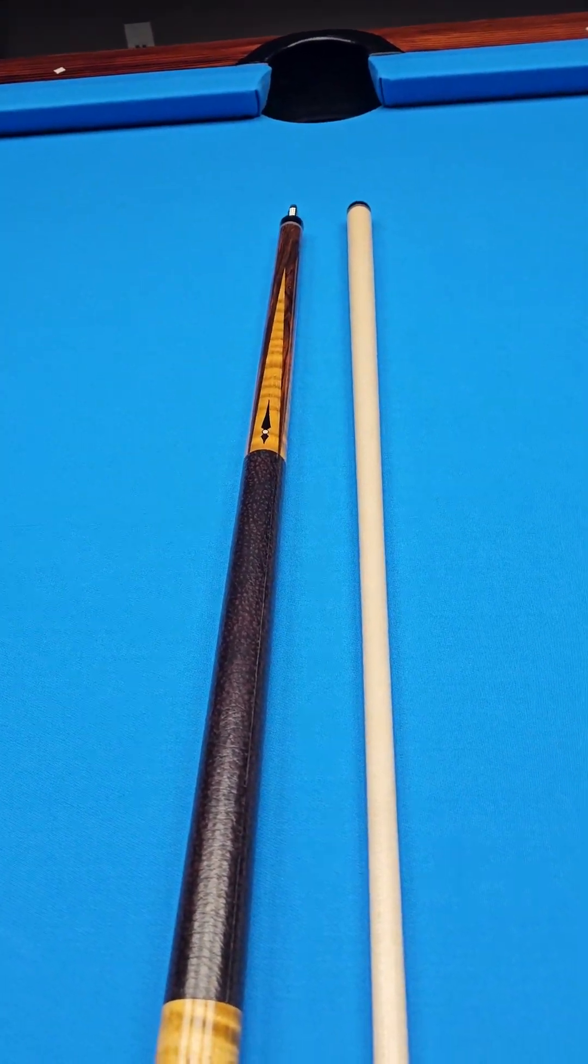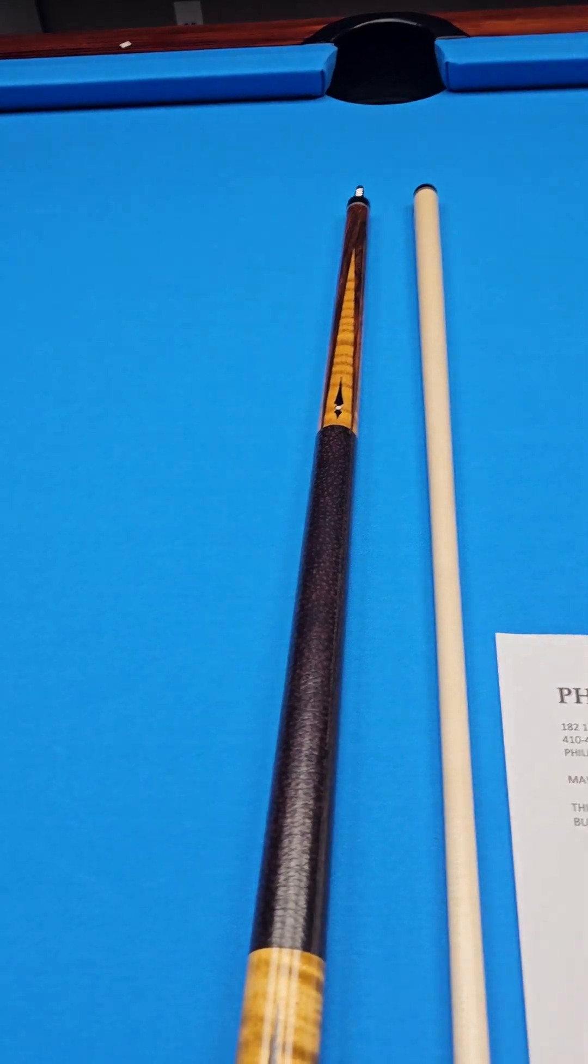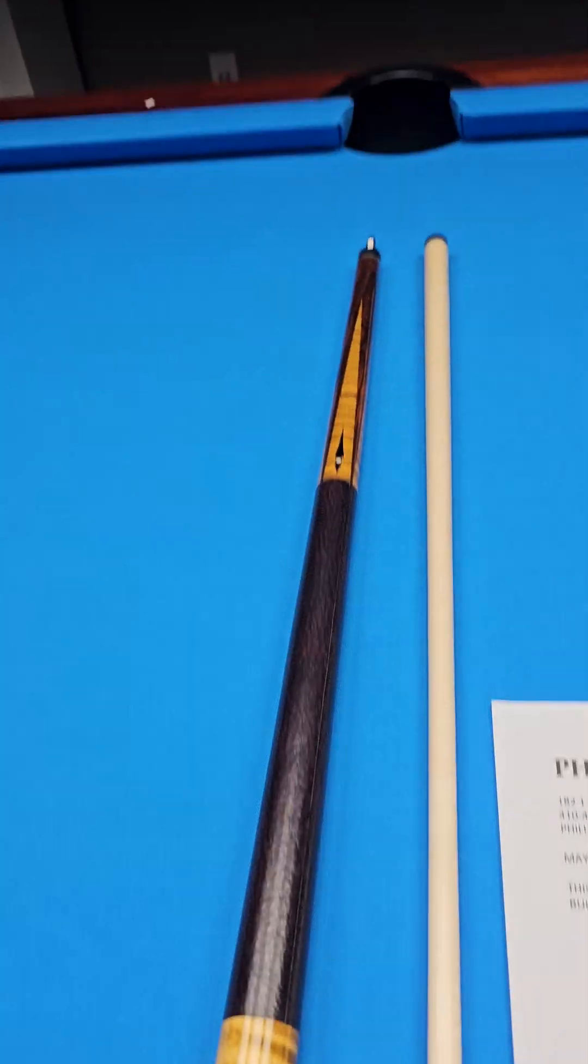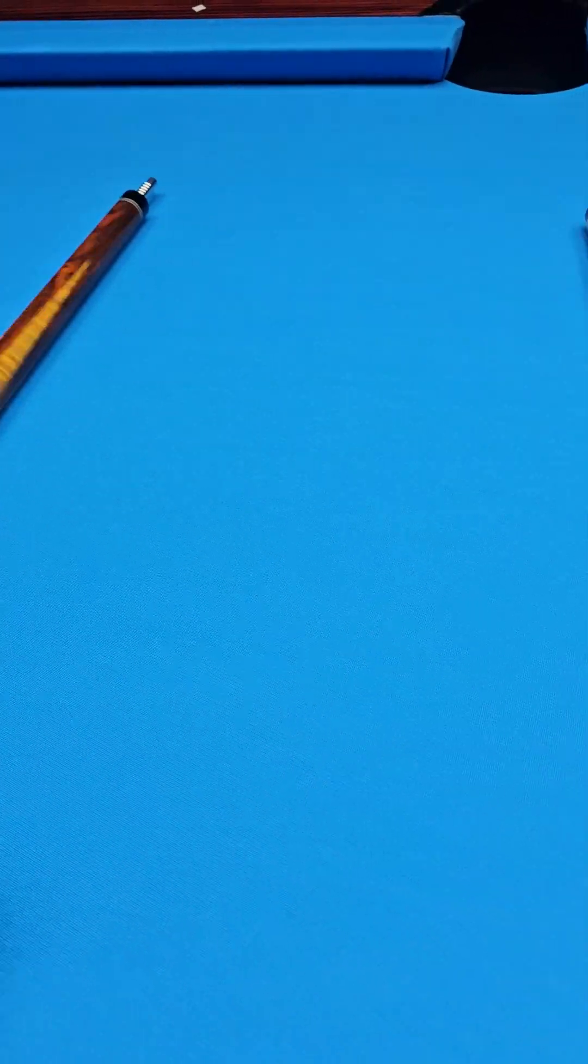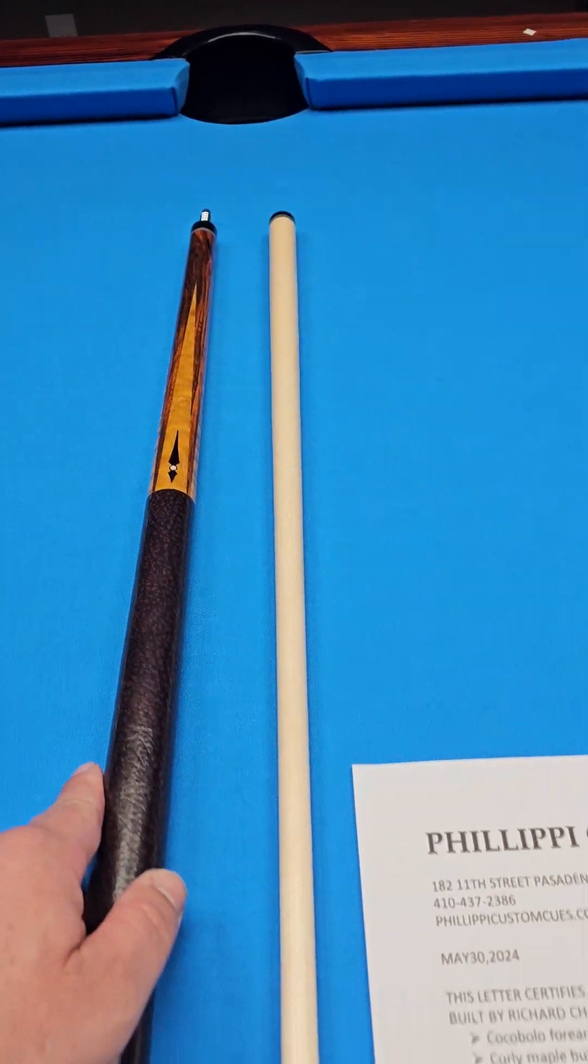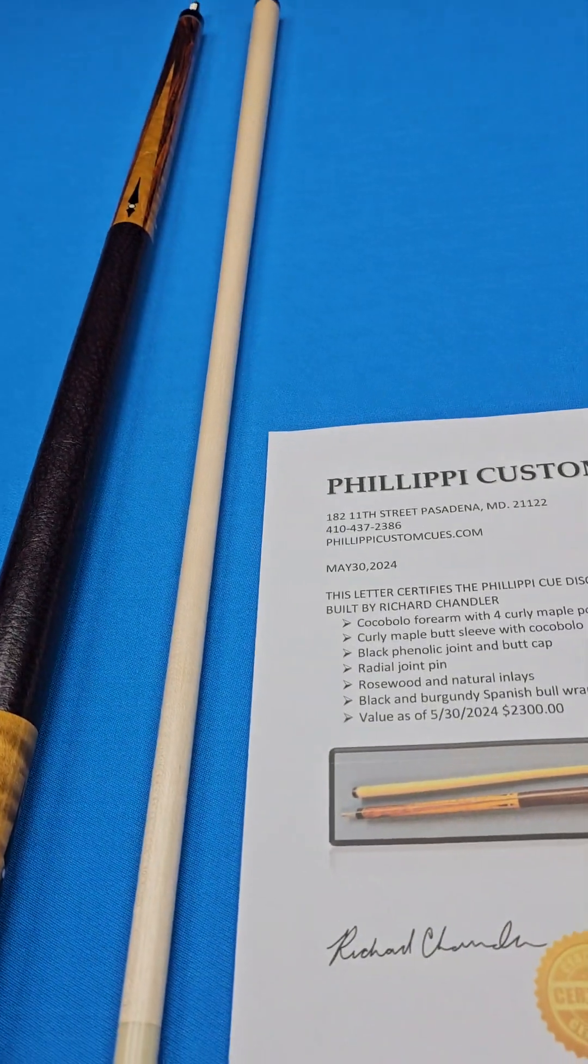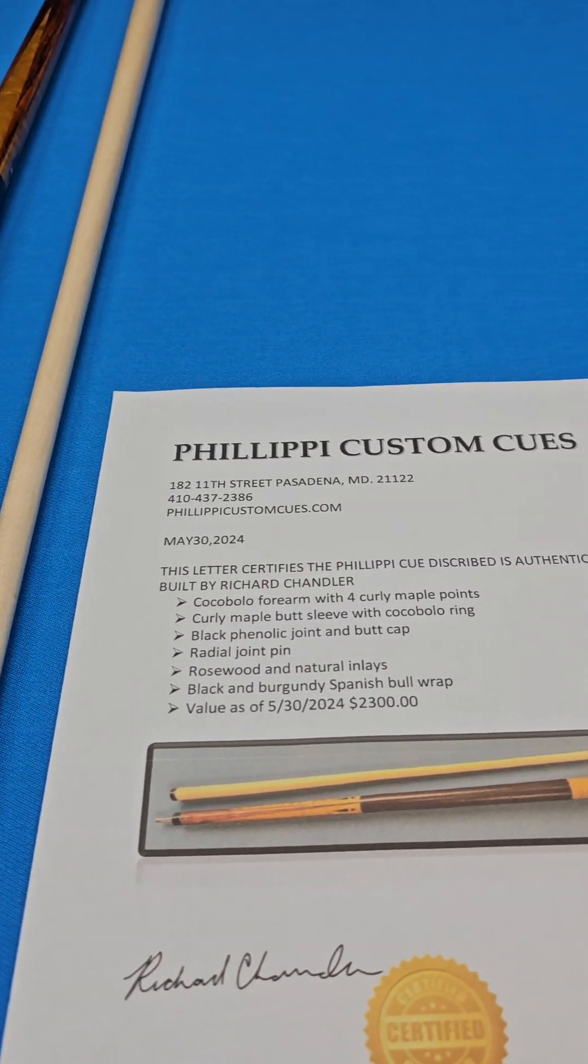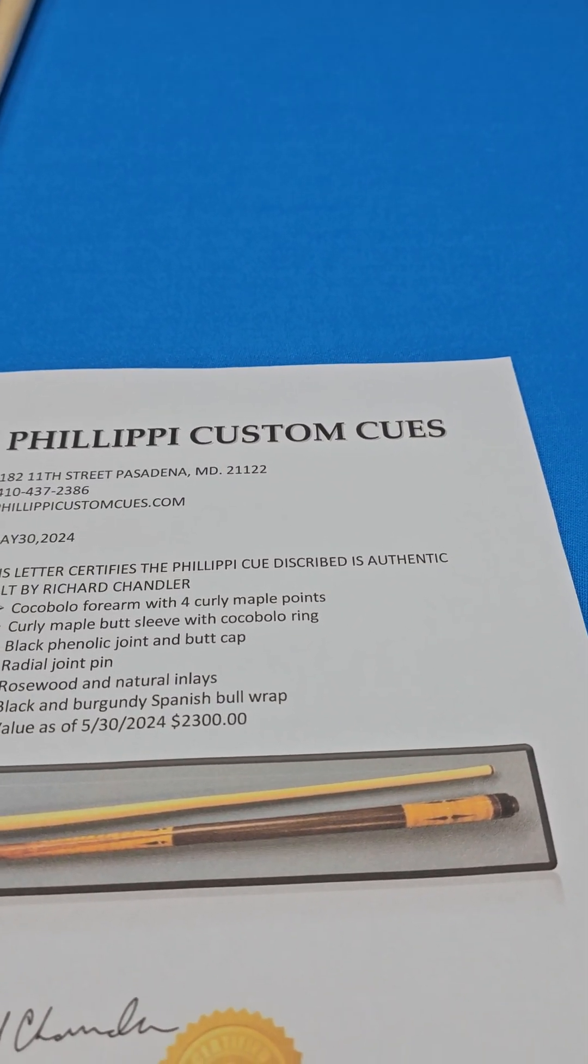This one's coming with an LOA as well. We had purchased a few cues from Rick that had been on order for a long time, and he was gracious enough to give us some LOAs with the cues. So I'm just going to read directly off of that. This certifies this Felipe Cue, described as authentic, built by Richard Chandler.